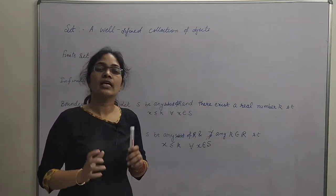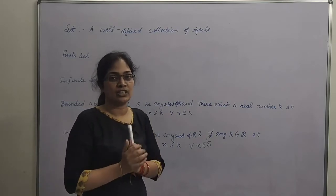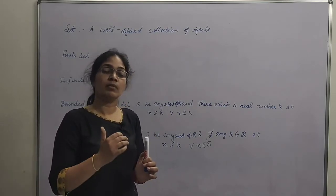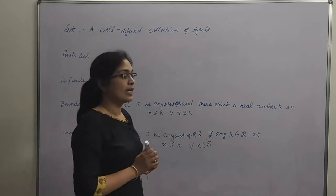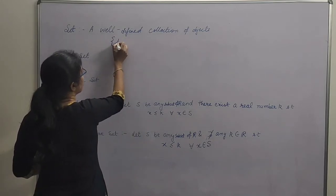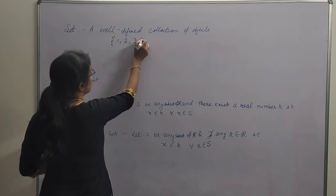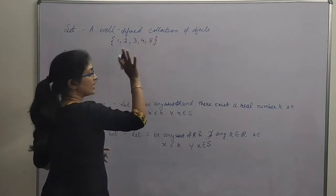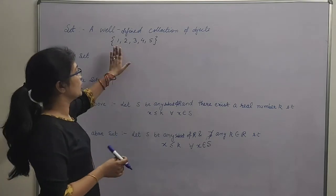Set kya hota hai? Kisi bhi objects ki well-defined collection — kisi bhi objects ki collection, but woh collection defined honi chahiye puri tarah se. Like, agar mai ek set define kare, which contains elements 1, 2, 3, 4, 5 — this is a finite set and it's well-defined.